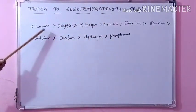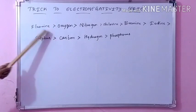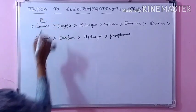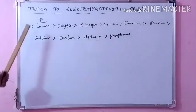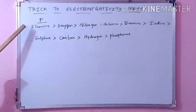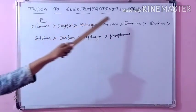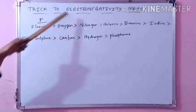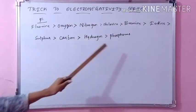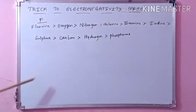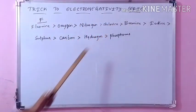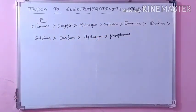Now you know that fluorine is the most electronegative element in the periodic table. This fluorine is the most electronegative element — this you have to remember. Only one you can remember easily, but the series is there. How it varies — next to fluorine which is there, next to oxygen which is there. So this is very difficult to remember, but using a trick we can easily remember the series. Now we will discuss that trick.